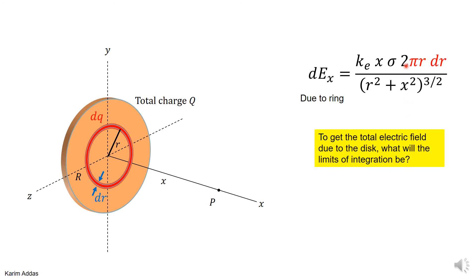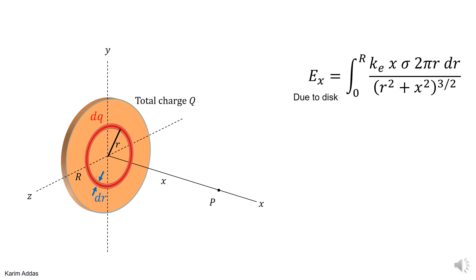We substitute the area as 2πr dr, and now all variables are in the correct form to integrate over r, the variable representing the ring radius. Remember, x is a constant in this problem — as you move from one ring to another, the distance x from the origin to point P doesn't change. To get the total electric field due to the disk, we integrate from r equals zero to r equals big R, covering all rings from the smallest at the origin to the outermost at the disk's edge.